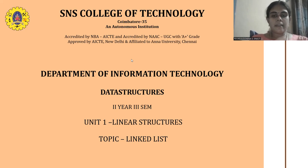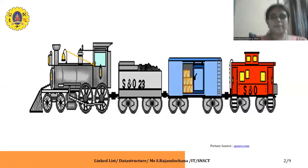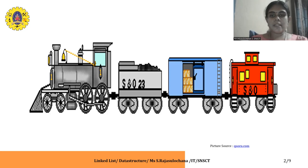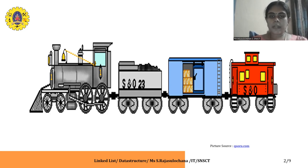I would like to explain linked list with a picture. This picture can clearly depict what a linked list is all about. Here, this is a train — let us take it as a data structure. Each compartment is linked together with the help of a linking chain. These compartments are called nodes in a linked list, and the chain used to link them is called the pointer. This chain links to the next compartment in the train. Similarly, in a linked list, the pointer will point to the next node in the linked list.